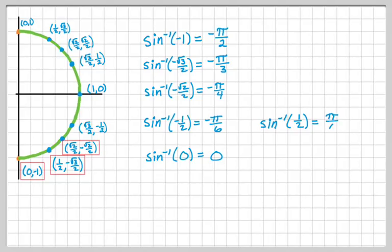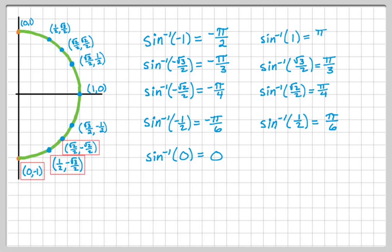Now I'm going to go up the list to just kind of show you the symmetry here. So we have inverse sine of 1 half is pi over 6. Inverse sine of radical 2 over 2 is pi over 4. Inverse sine of radical 3 over 2 is pi over 3. And the inverse sine of 1 is pi over 2.